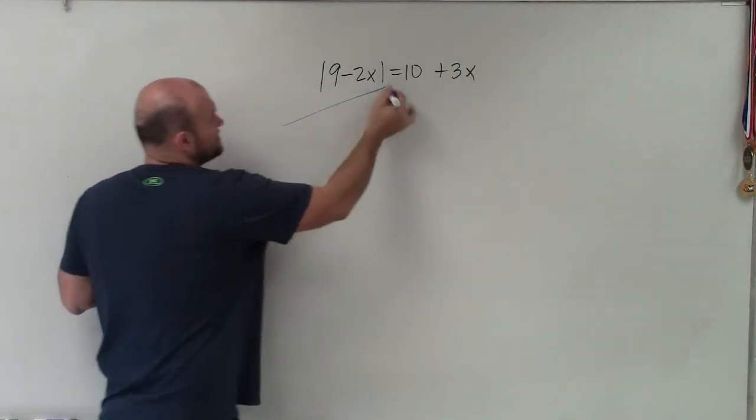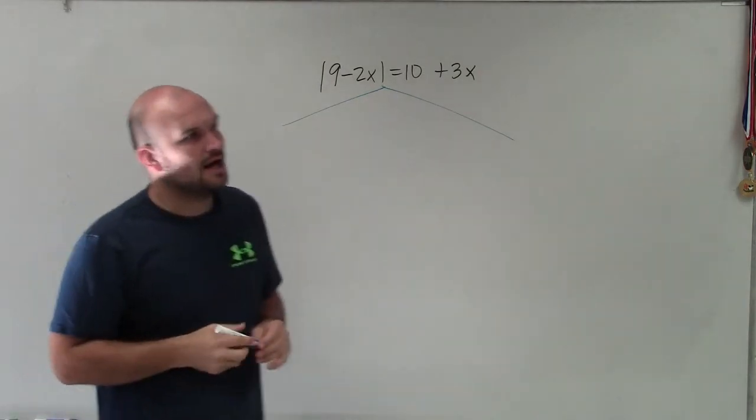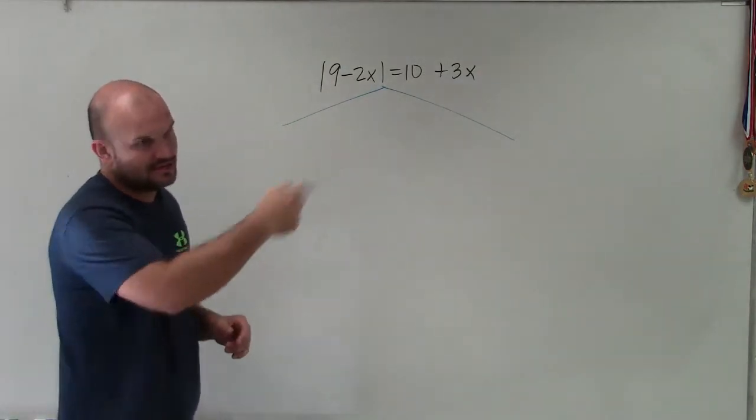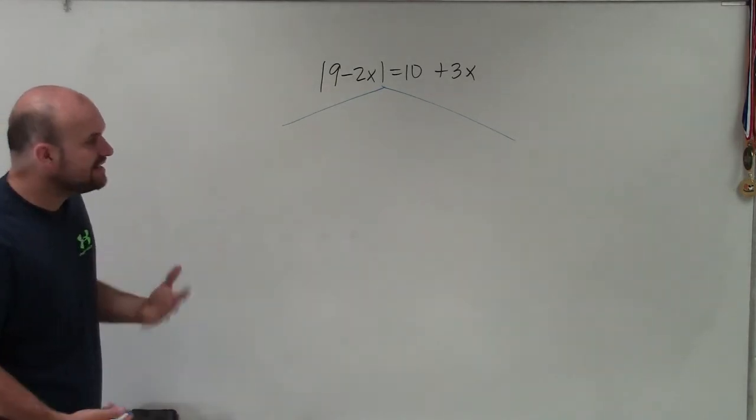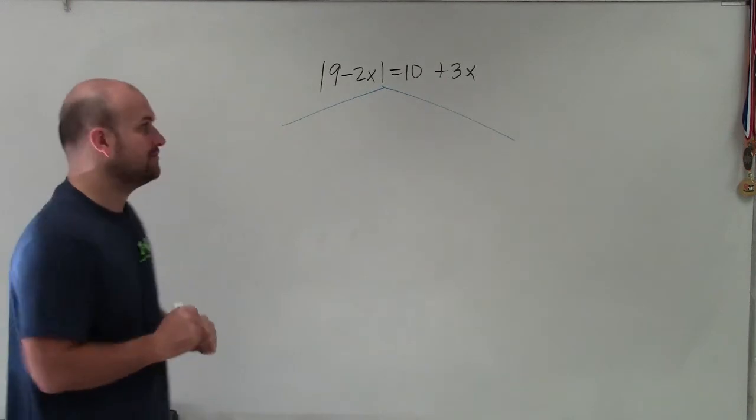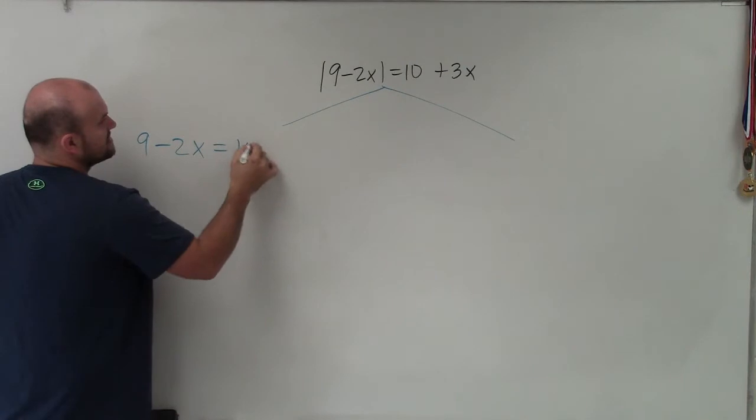So therefore, I need to make sure I set up two cases. And when setting up two cases, go ahead and write down the review that we already talked about. We need to set up our two cases, one for the positive, one for the negative. And when we do that, we can eliminate our absolute value symbols.